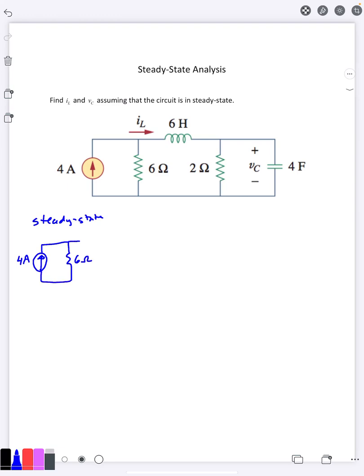So the 6 Henry inductor up here is now going to be just a short, but the current going through there is still IL. So there is an inductor there, it just behaves as if it was a short.